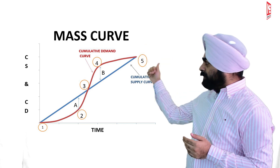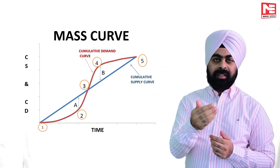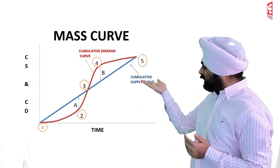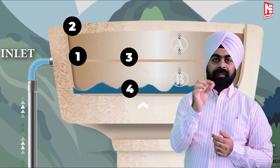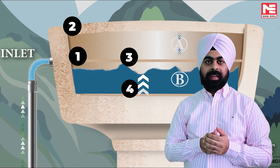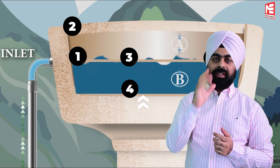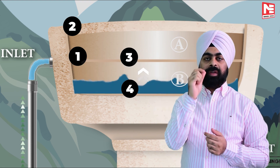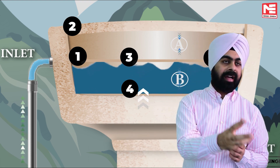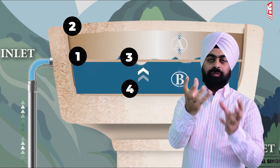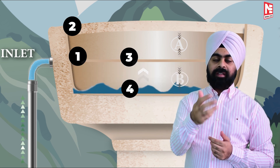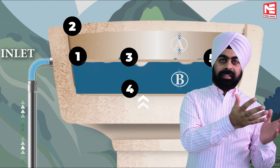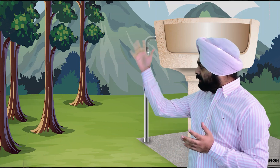Beyond 0.4, the rate of demand becomes less than the rate of supply. At point 0.5, both curves are meeting with each other again. This means that in 24 hours, the amount of water in the reservoir will be the same as it was in the beginning of the analysis, that is equal to B liters.